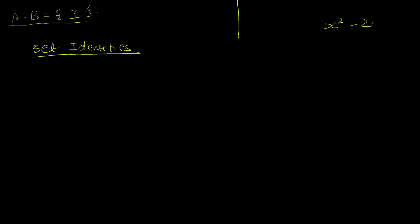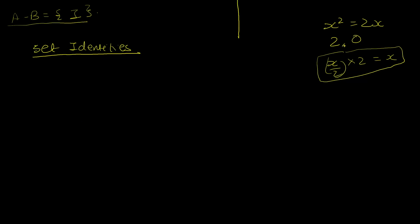There are equations we solve for specific values, and there are identities which are always true. We will list the different identities discoverable in the world of sets across all the operations — union, intersection, difference, and complement — and go through each to understand why they hold.